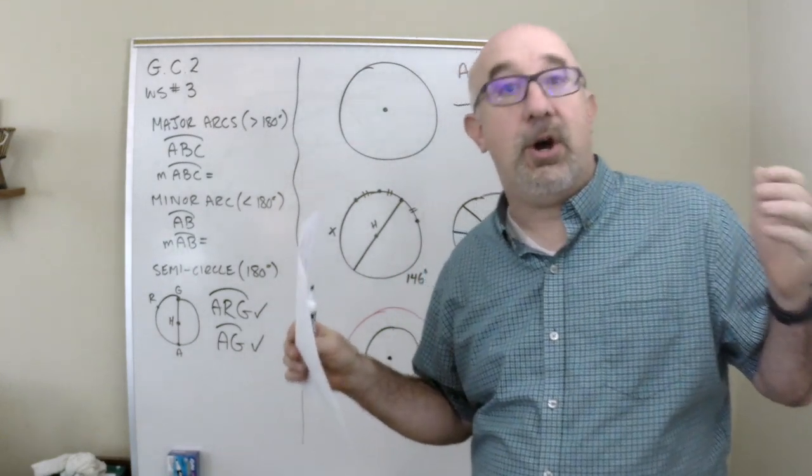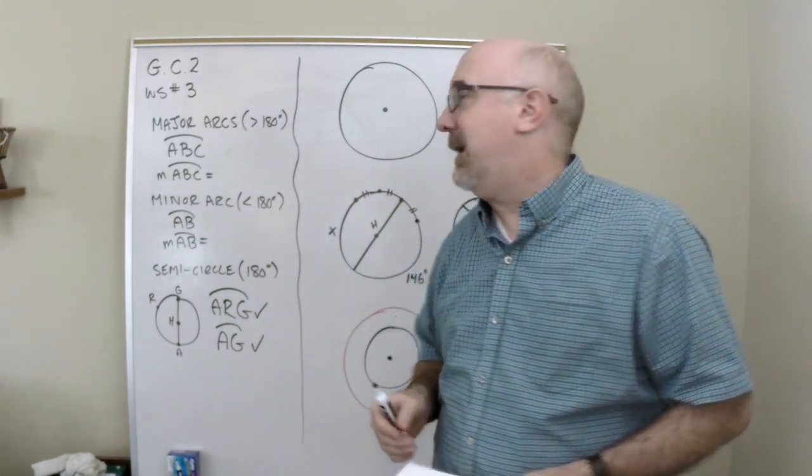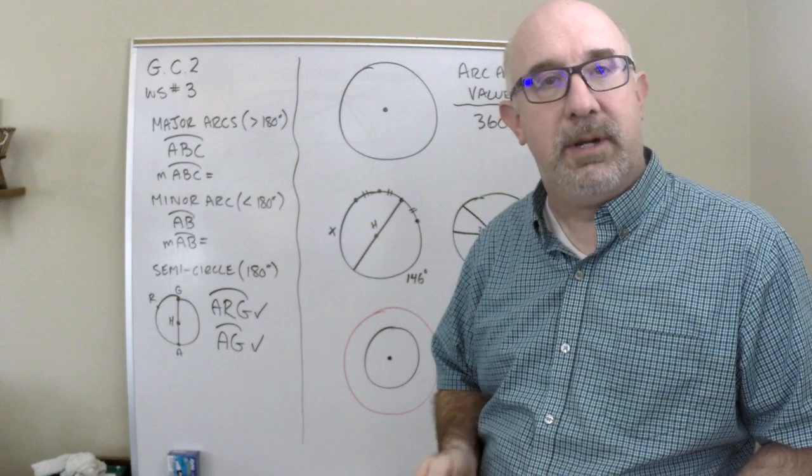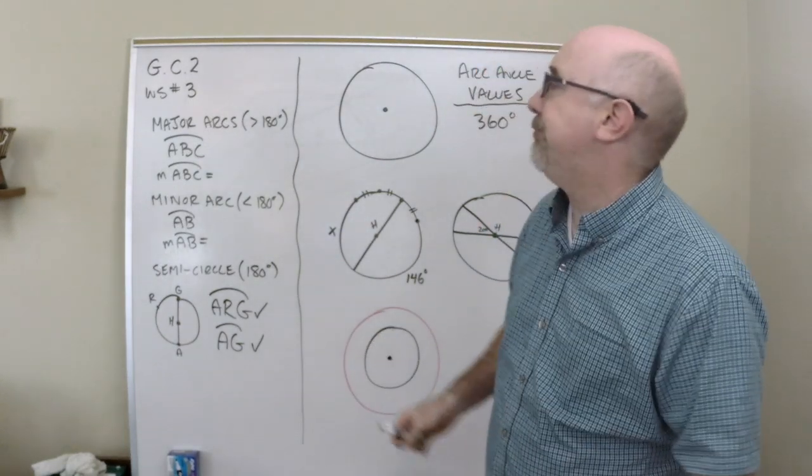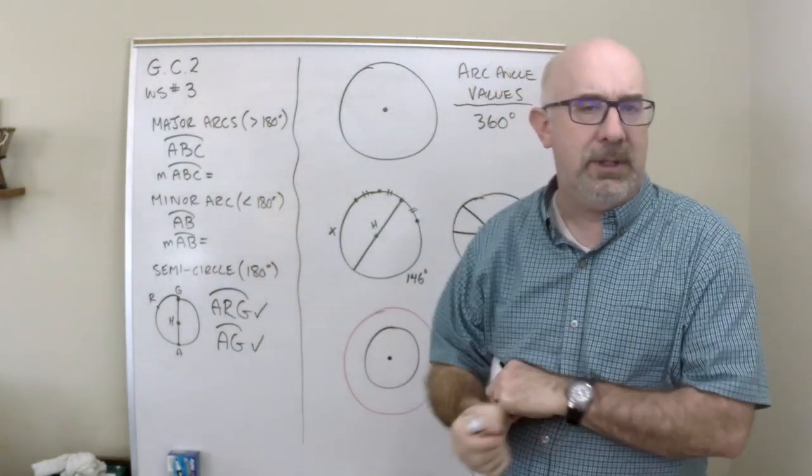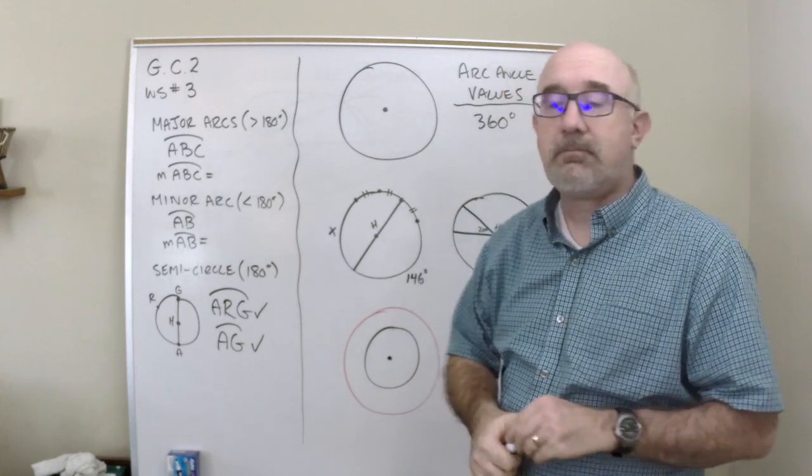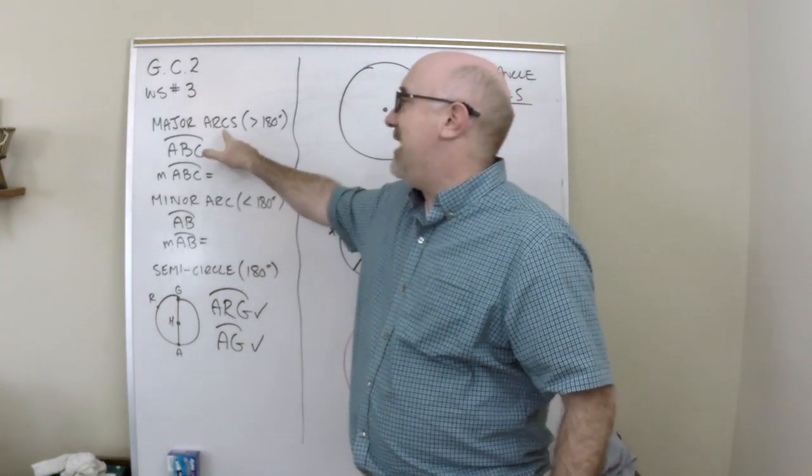This worksheet is all about arcs, and let's just go through notation for just a minute here first. Major, minor, and semicircular are the three basic types of arcs, and they're denoted a major arc,